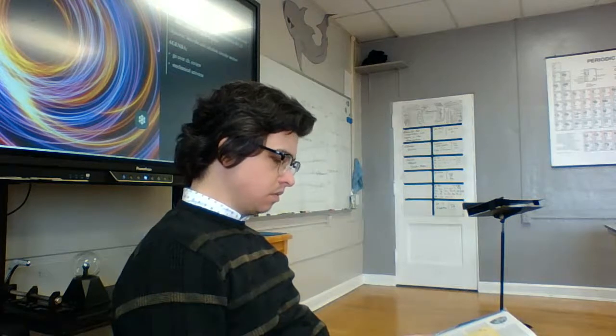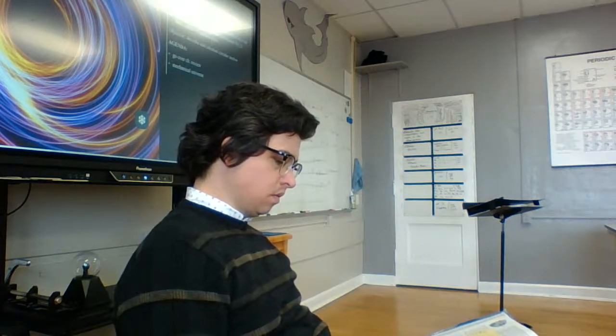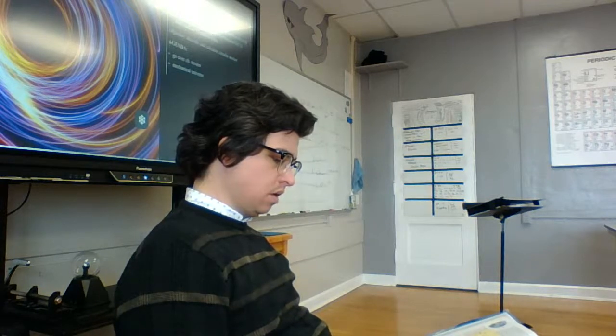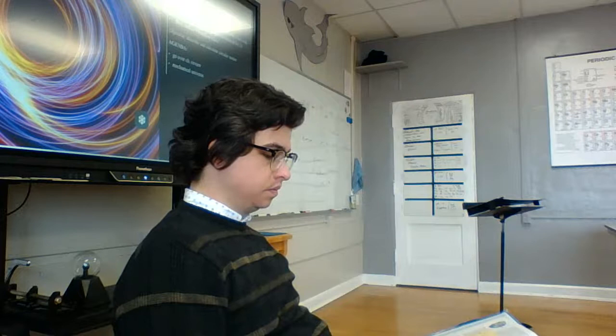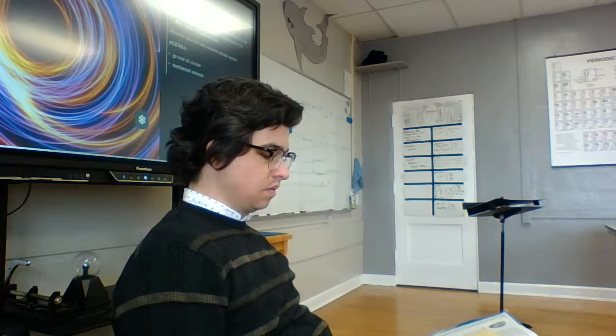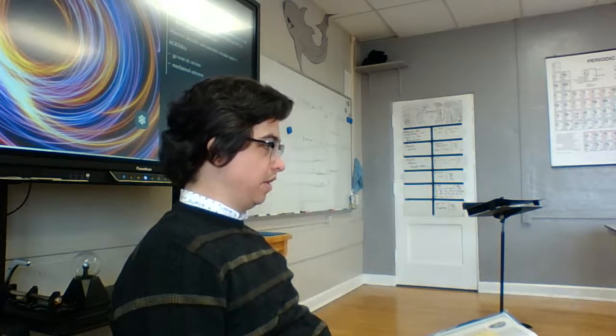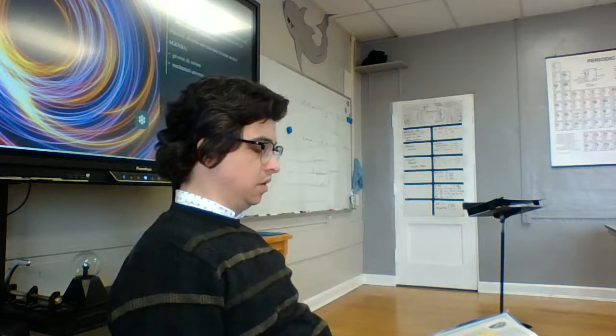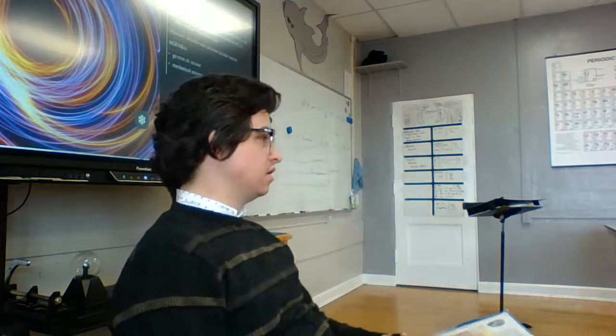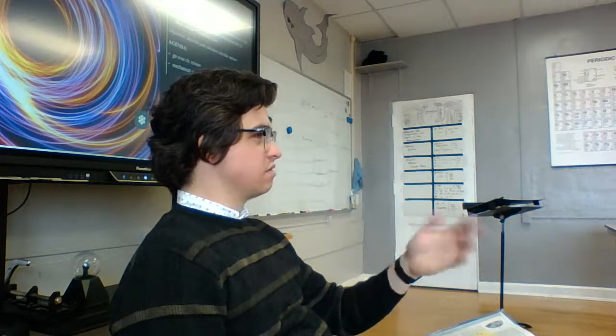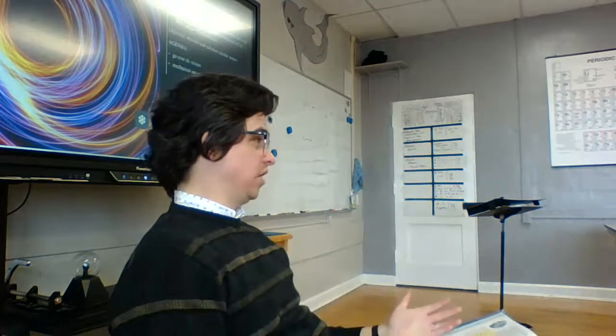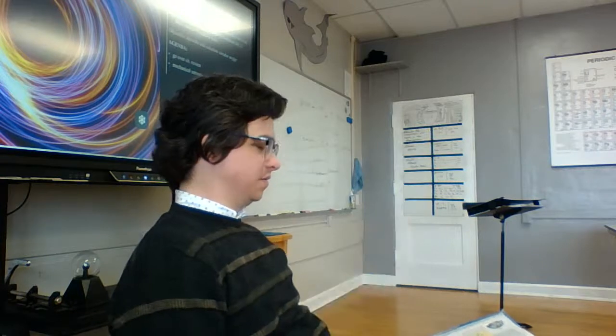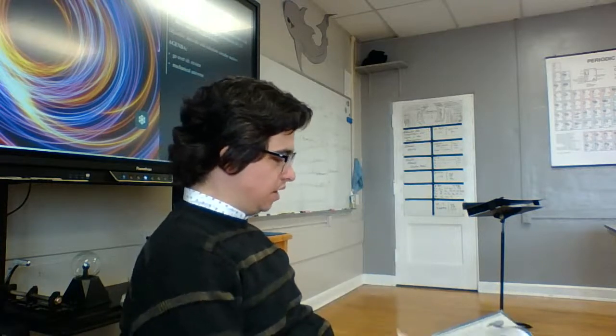Next question. For a rotating space habitat of a given size, what is the relationship between the magnitude of simulated gravity and the rotation rate? The magnitude of simulated gravity is proportional to the square of the rotation. So omega, the rotational speed squared, is proportional to the simulated gravity. Simulated means like pretend, like it's pretend gravity, right? Whereas stimulated means all jacked up.